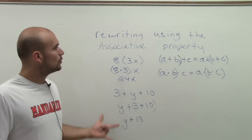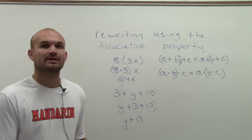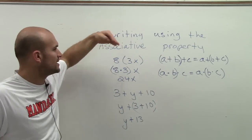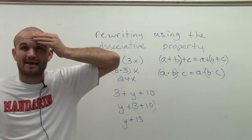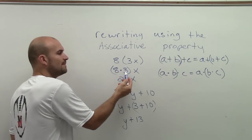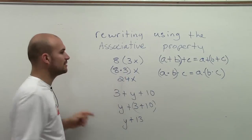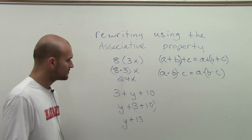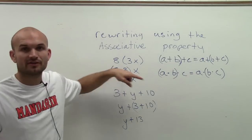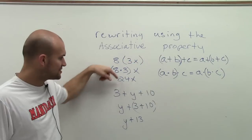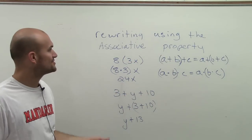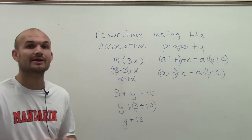You can see we can use the associative property to allow us to do the operations that we know. Sometimes we get confused with 8 times 3x. If you can use the associative property, just multiply the numbers. Number times a variable is going to continue to be your number times your variable. The same thing if I have the 3 and the 10 but there's a y in between them, I can just rearrange this and add my numbers and then add them to my variable. So that's how we use the associative property to rearrange.